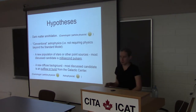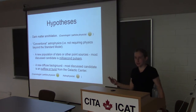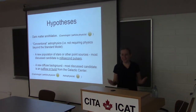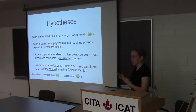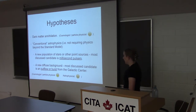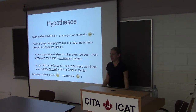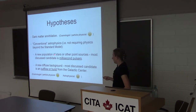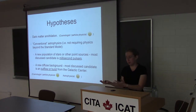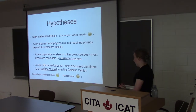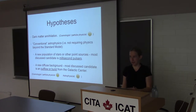I'm very happy to talk more about this, as I've given whole-hour seminars on these issues. So what about hypotheses for what this could be? One is dark matter annihilation — the one that makes particle physicists very excited — where what we might be seeing are the first signals of interactions between dark matter and the standard model. The other class of hypotheses is what particle physicists call conventional astrophysics, meaning it doesn't require physics beyond the standard model. The two leading explanations are: some population of stars and point sources with a spherically symmetric distribution rising steeply toward the galactic center — the most discussed candidate being millisecond pulsars — and some kind of new diffuse background from an outflow or burst from the galactic center.